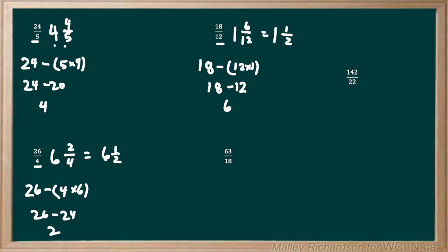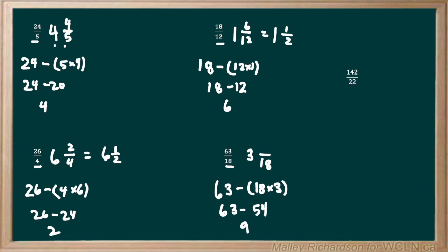Moving on to our next improper fraction, we have to see how many times does 18 go into 63. 18 goes into 63 three times, so we write 3 as our whole number and then we have our fraction with 18 as the denominator, same as our original question. To find the numerator, we take 63 and subtract 18 times 3. 18 times 3 is 54, so we have 63 minus 54 to give us 9. So we have 3 and 9 over 18, but 9 over 18 can reduce down to 1 half, so we have 3 and 1 over 2.